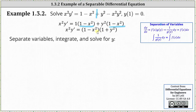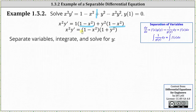Notice on the right side we now have a function of x times a function of y, but we still have x squared on the left. We can divide both sides by x squared, which still gives us a function of x times a function of y with y prime on the left. So this is now in the form where we can use the technique of separation of variables.